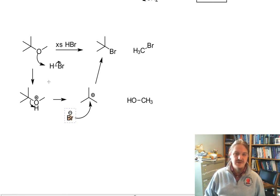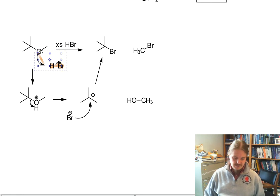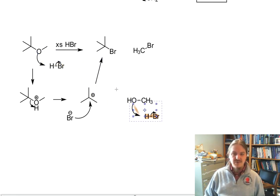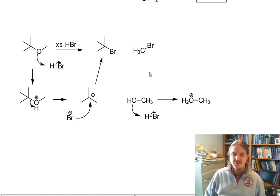And then we can have, just as we did in the previous example, our methanol can pick up an extra proton. So now we have a good leaving group. We have that bromide anion.